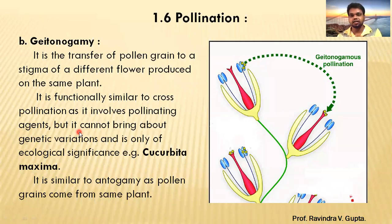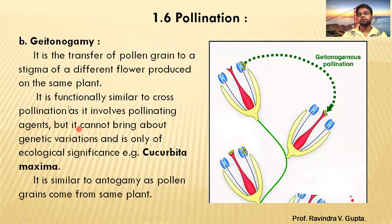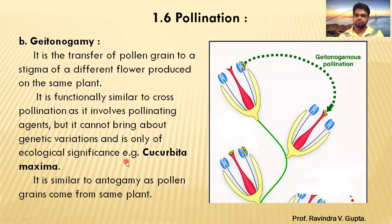The difference from autogamy is that in autogamy pollination occurs within one flower, whereas in geitonogamy pollen is transferred between different flowers. This condition is functionally similar to cross-pollination as it involves a pollinating agent, but it cannot bring about genetic variation because both flowers are on the same plant. An example is Cucurbita maxima.